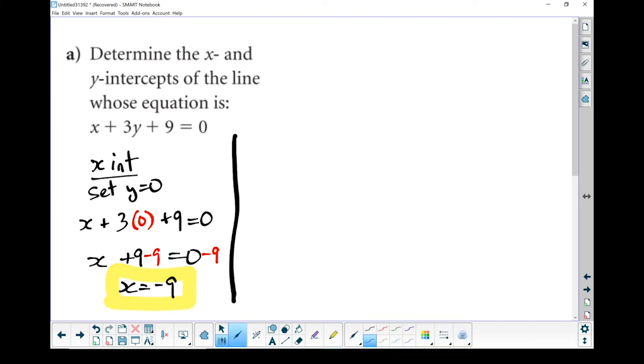Let's move on to our y-intercept. In this case, we're going to set x to equal 0. I'm going to rewrite my equation. Anywhere where there's an x, I'm going to put in a 0. So I've got a 0 because that's an x all by itself. Plus 3y plus 9 equals 0.